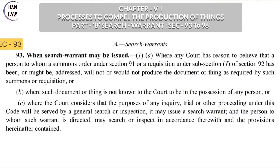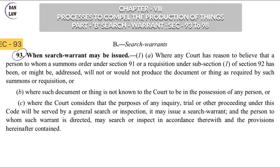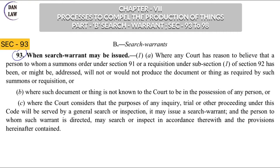Come to section 93 — when a search warrant may be issued. Clause 1: Where any court has reason to believe that a person to whom a summons or order under section 91, or a requisition under subsection 1 of section 92 has been or might be addressed, will not produce the document or things as required by such summons or requisition.